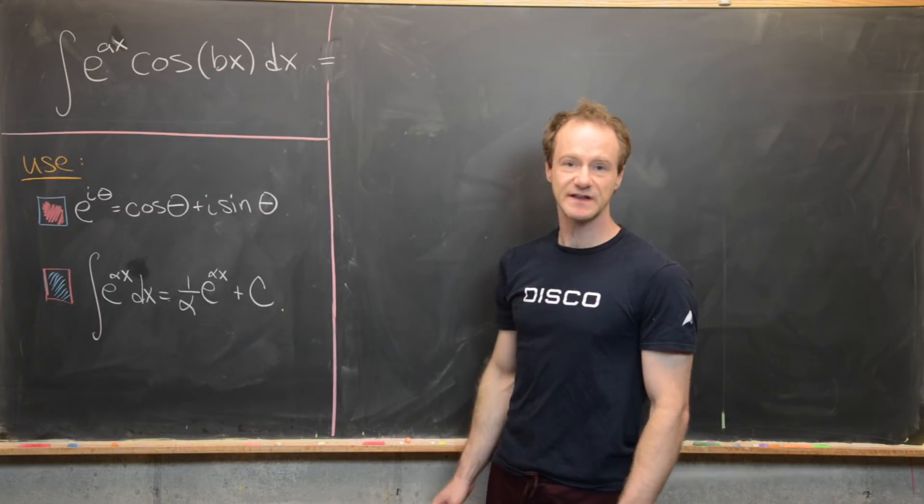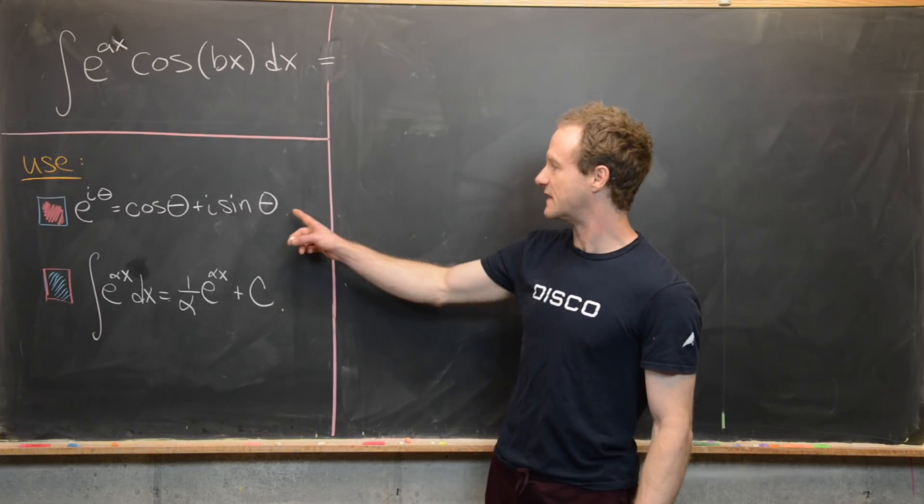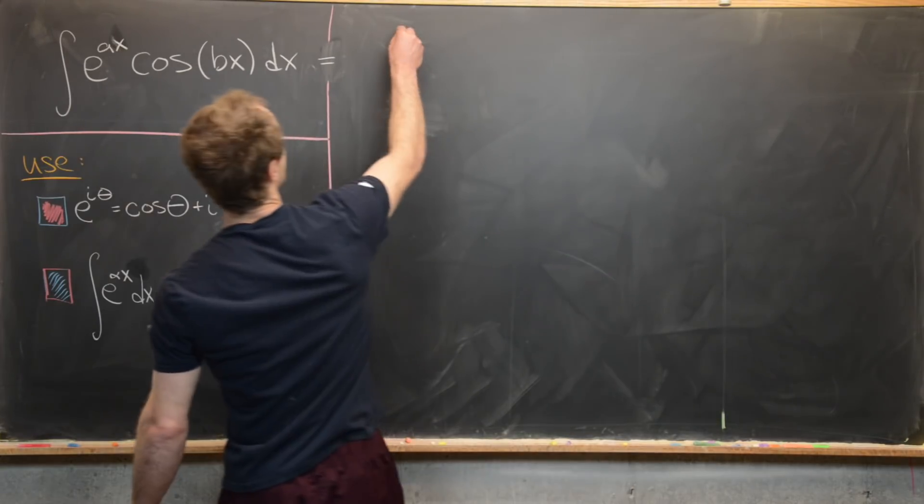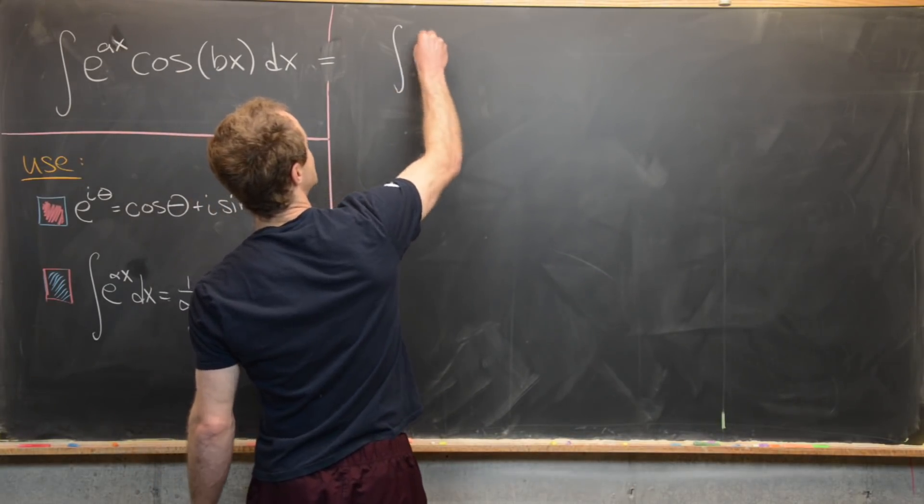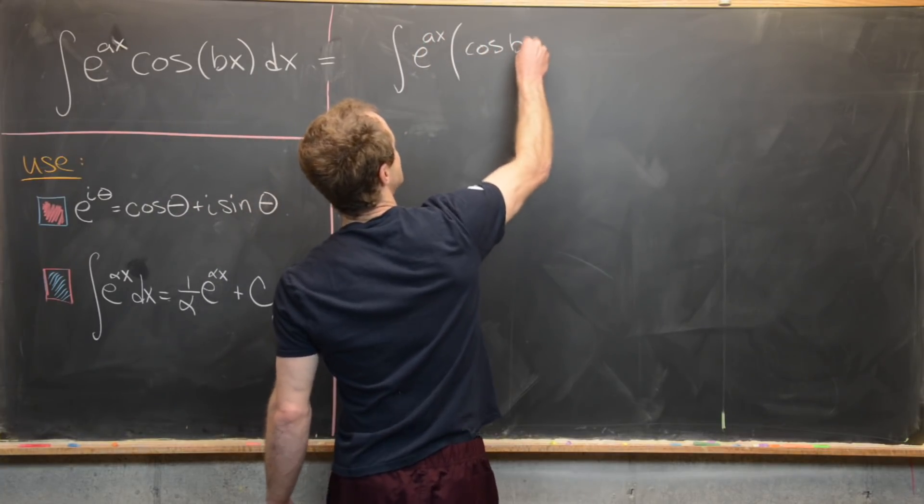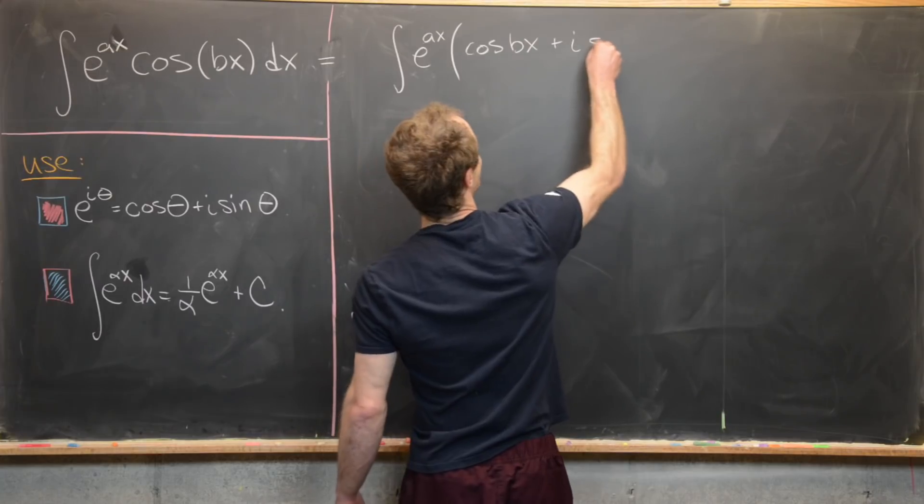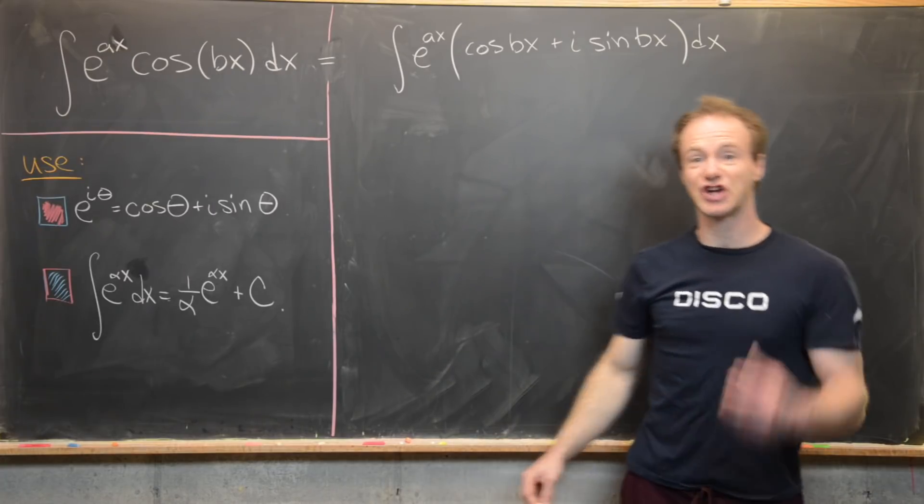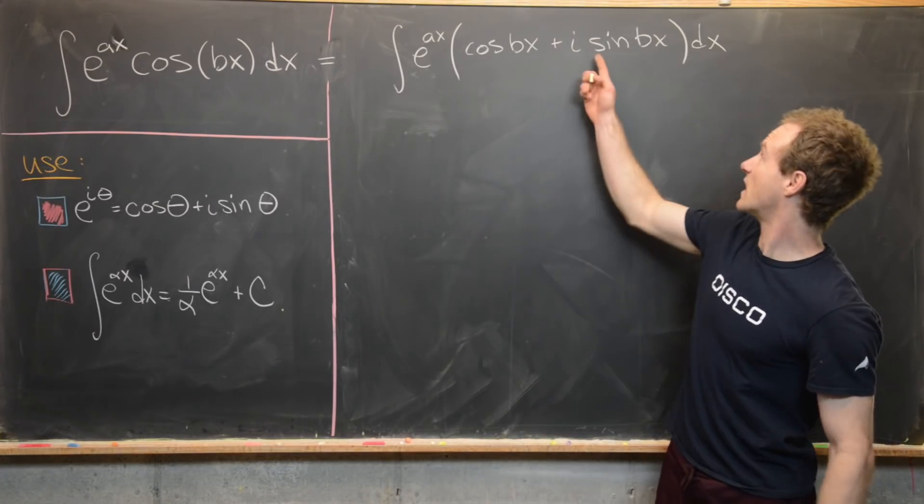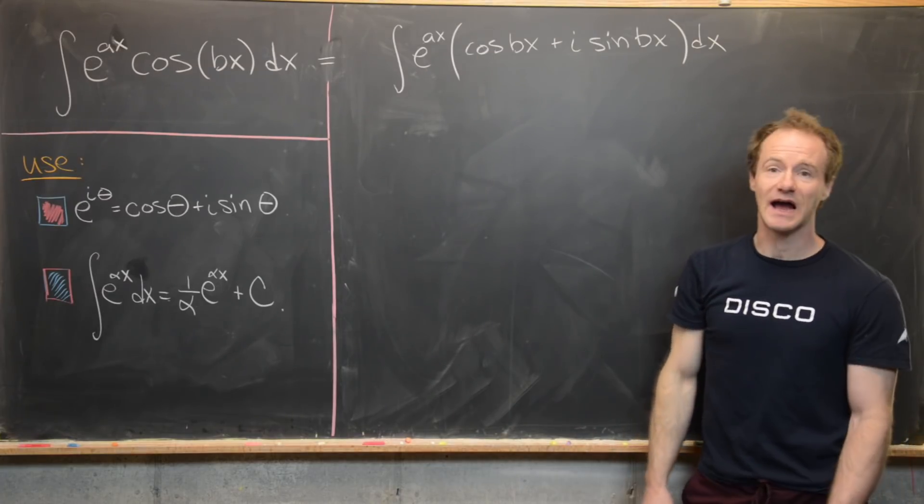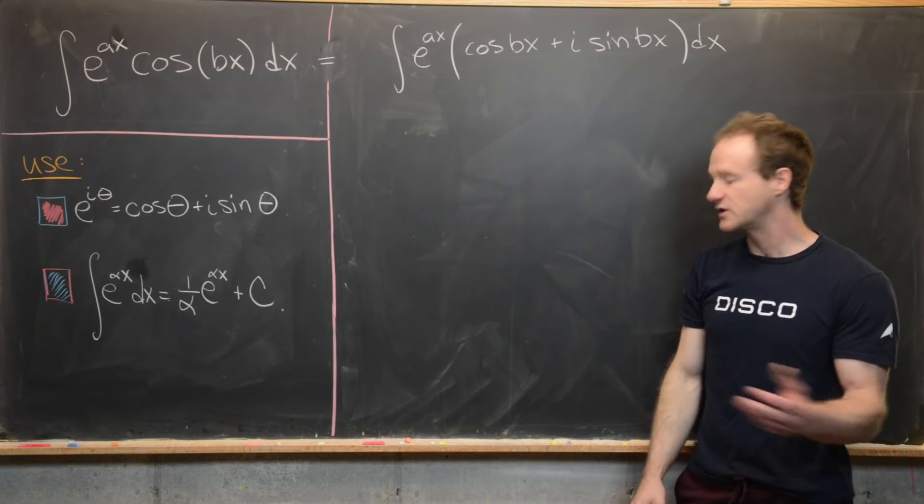So let's get to this. The first thing I want to do is add something to the integrand so it looks a little bit more like this. I'm going to replace this with the integral of e^(ax) times the quantity (cos(bx) + i·sin(bx))dx. But of course, I've changed the integral in this case, and I've changed it by adding e^(ax) times i·sin(bx). And so that's a problem.